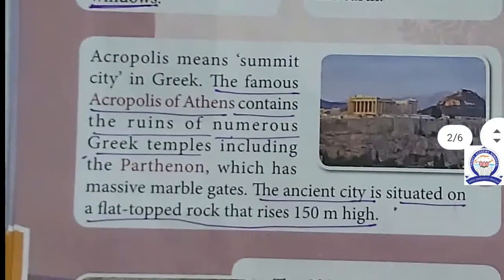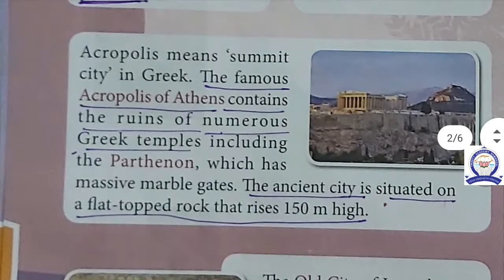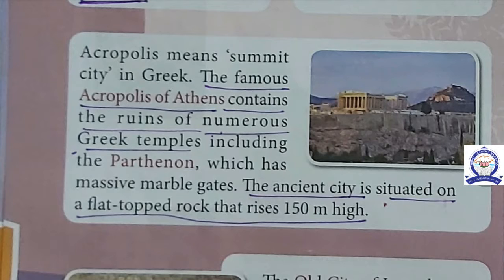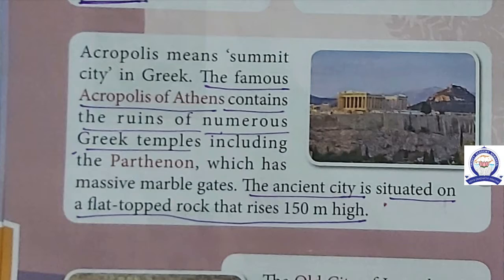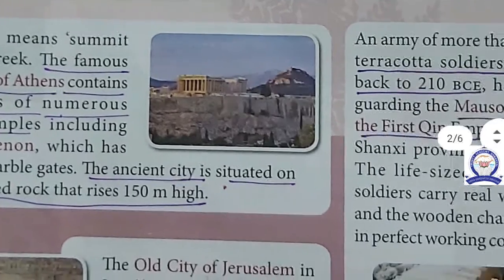The next one is the Acropolis. It means 'summit city' in Greek. It is the famous Acropolis of Athens — a Greek temple. The ancient city is situated on a flat-topped rock that rises 150 meters in height.